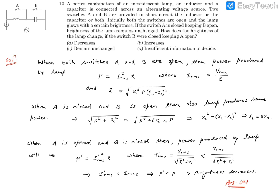Question number 13. It reads: a series combination of an incandescent lamp, an inductor, and a capacitor is connected across an alternating voltage source, as shown in this figure.